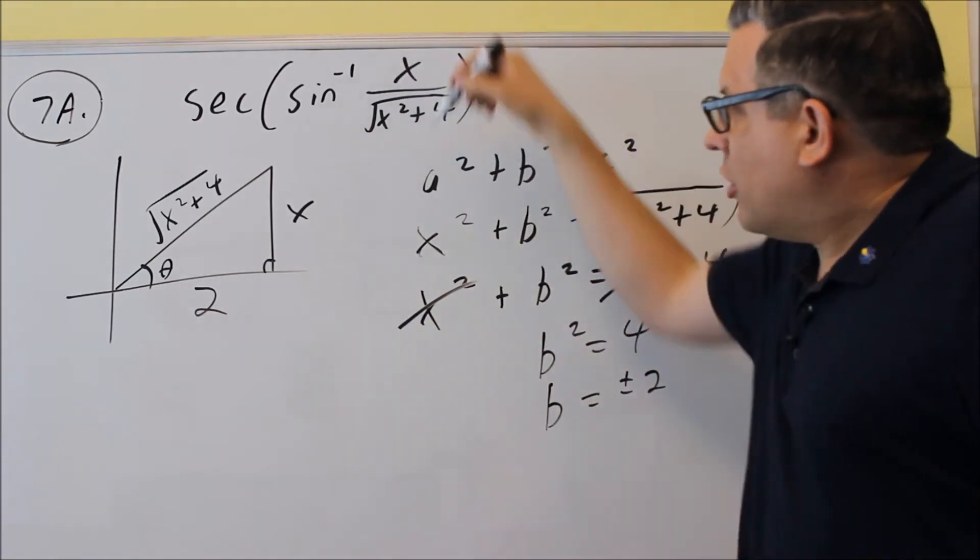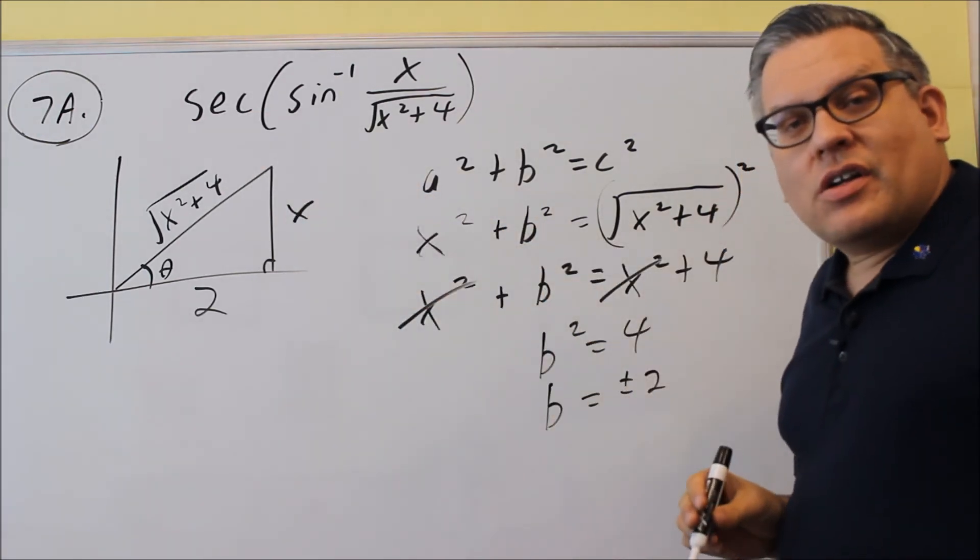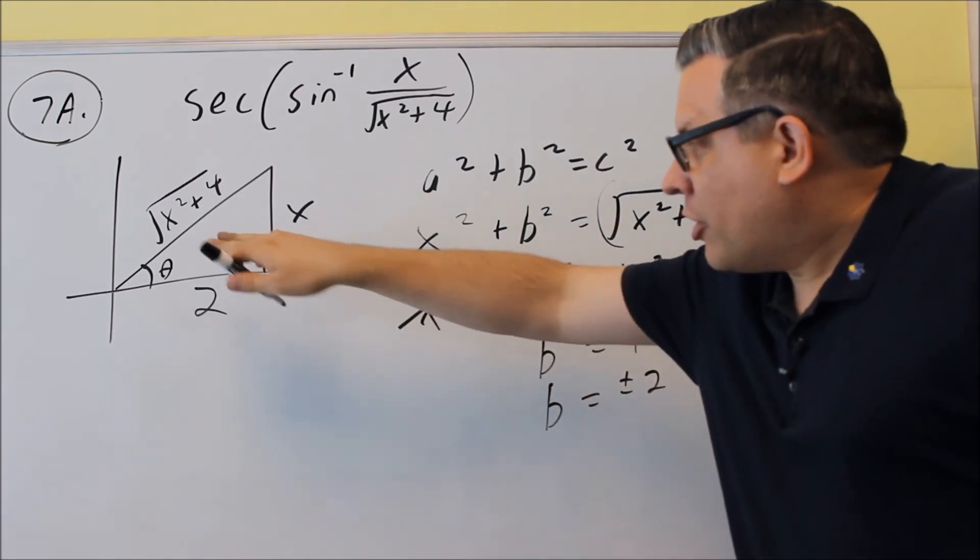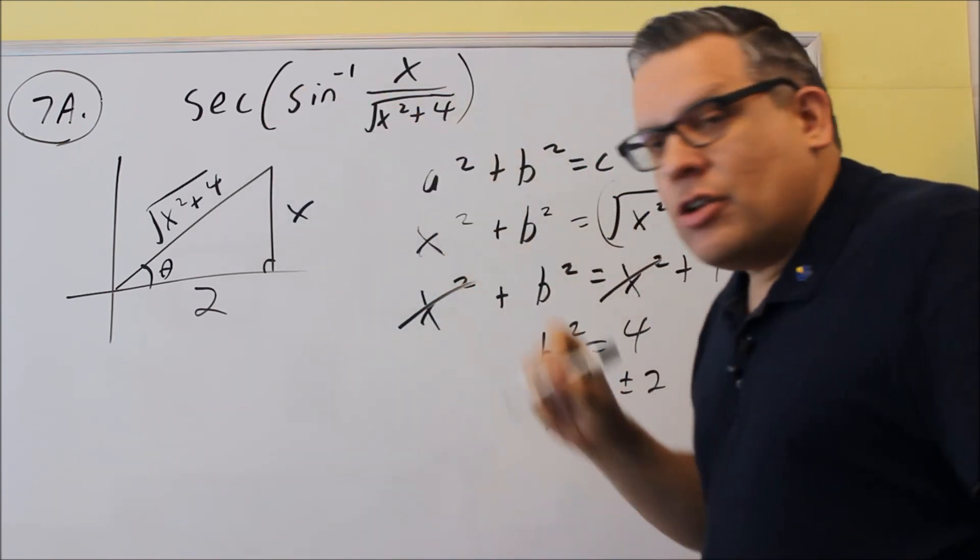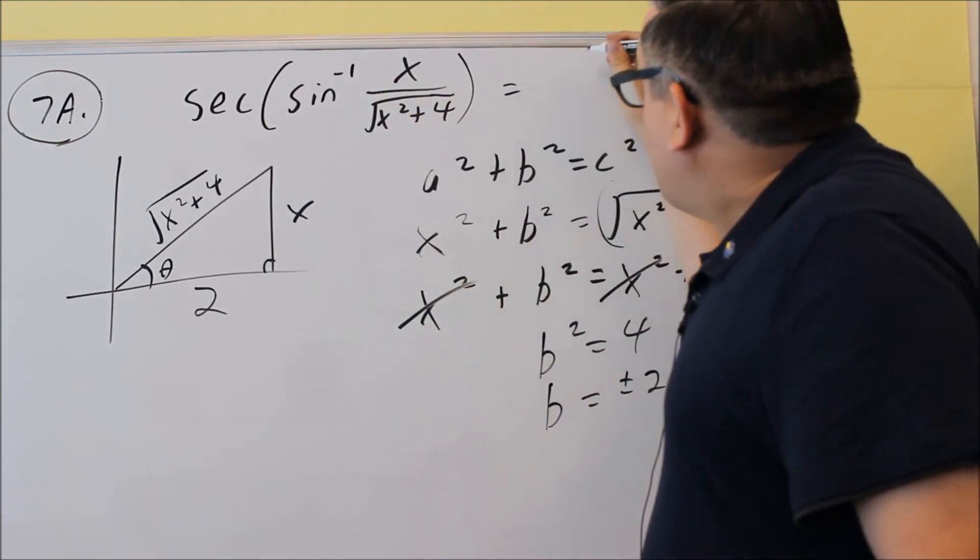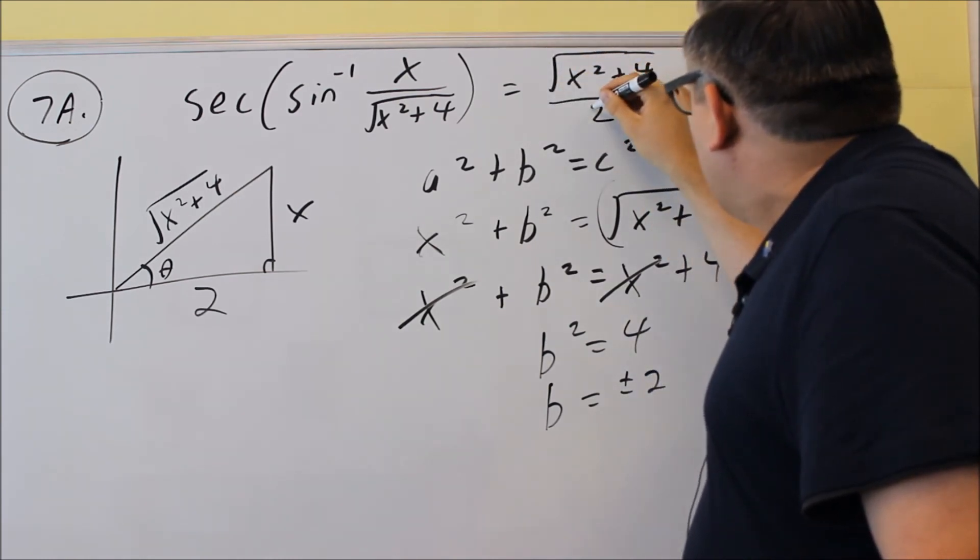So we've used the inside one to label the triangle. So now we're going to use the outside one to indicate our answer. We want to use the definition for secant. We're going to use our drawing just like that. Secant is equal to the hypotenuse over the adjacent. Which, for this problem, is going to be the square root of x squared plus 4 all over 2.